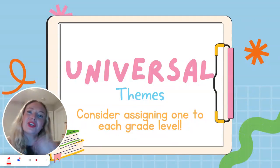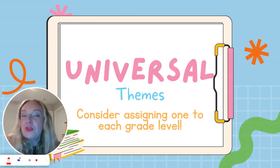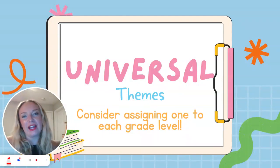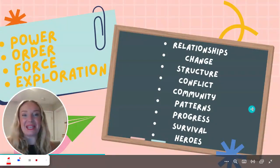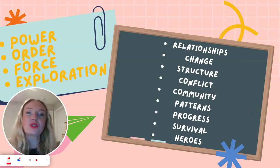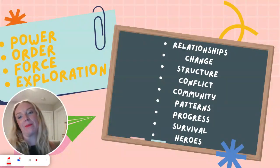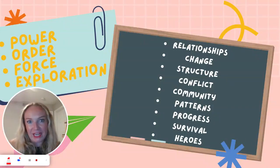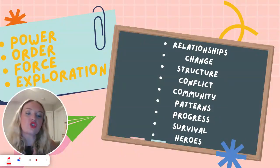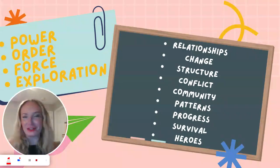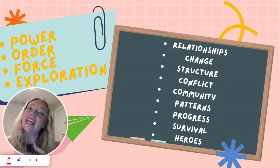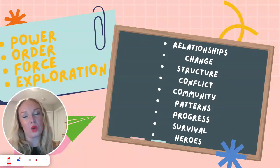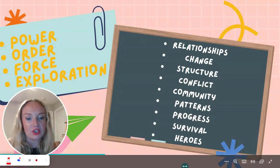Feel free to reach out — you can email littlemissgiftedteacher@gmail.com or DM me on Instagram if you want to talk through that. Universal themes or big ideas might include topics like power, order, force, exploration, or concepts like relationships, change, structure, conflict, community, patterns, progress, survival, and heroes. Google it — you'll find tons of different ideas for universal themes. If this is new to you in gifted education, spend some time thinking about which ones would work best where you are serving gifted students.